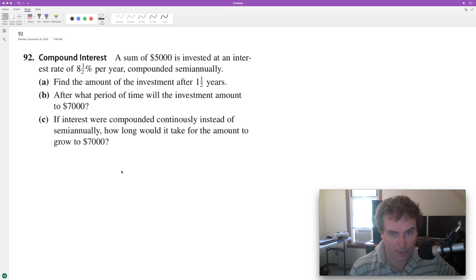We have a sum of $5000 that's invested at a rate of 8.5% compounded semi-annually. We want to find the amount after a bunch of different scenarios, so we'll go ahead and go through them.